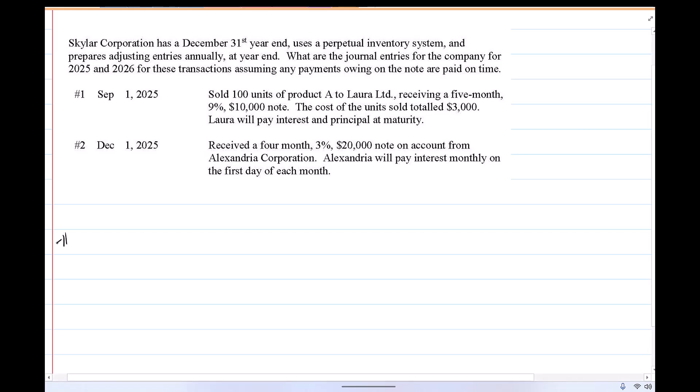So let's start with number one, September 1, 2025. Sold 100 units of product A to Laura Limited, receiving a five month, 9% $10,000 note. The cost of the units sold totaled $3,000. Laura will pay interest in principal at maturity.